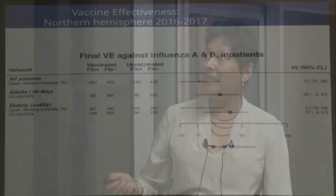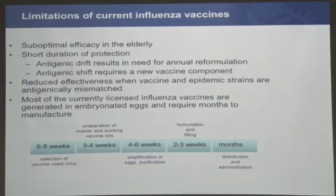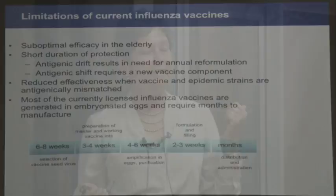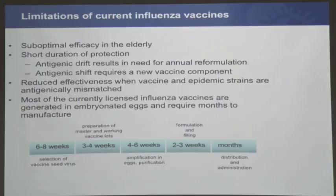There are lots of limitations of the current influenza vaccines. The efficacy in the elderly is poor. There's a relatively short duration of protection, partly because of antigenic drift, but also even when they are matched well and we've guessed right, the vaccines are not terribly effective. There's also the possibility that we've guessed wrong, because we make the decision six months ahead and the virus is continuing to evolve in nature.